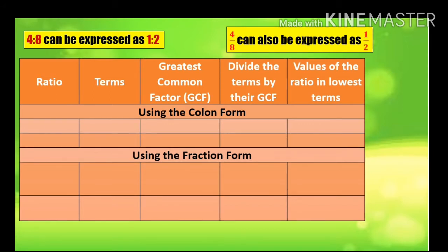So what is the ratio? The ratio is 4 is to 8. What are the terms? If the ratio is 4 is to 8, the terms are 4 and 8. What is the GCF or the greatest common factor of 4 and 8? Their greatest common factor is 4.